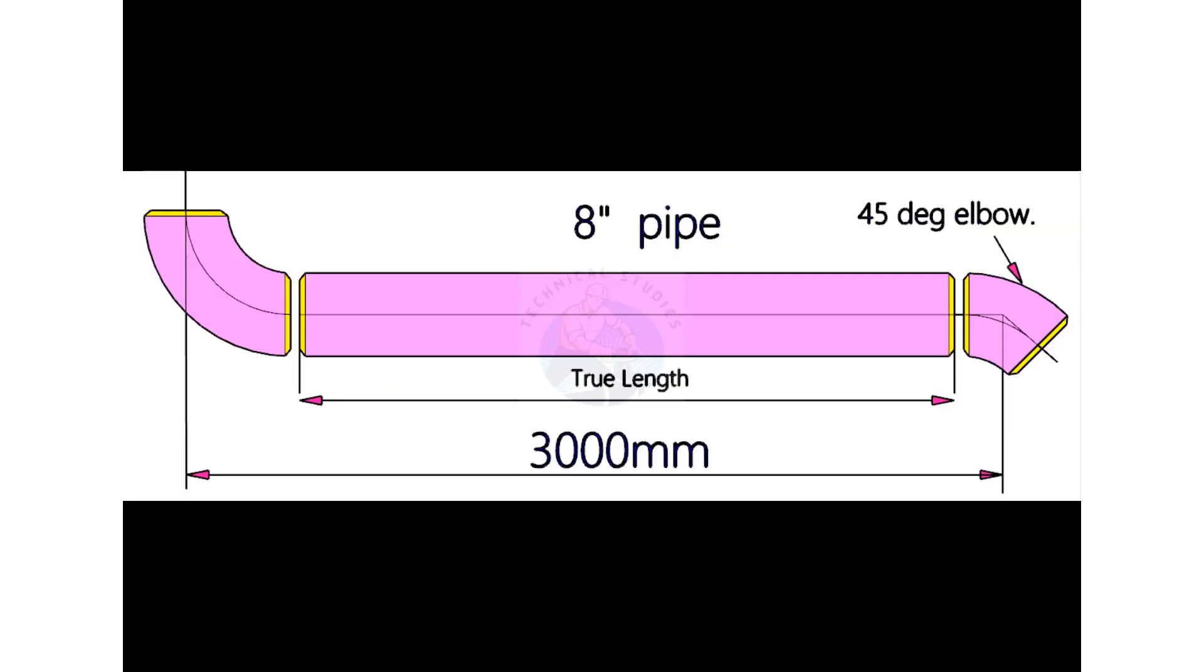Let us try another example. This piping has an 8 inch, 90 degree long radius elbow and 45 degree elbow.